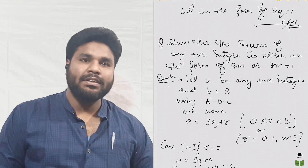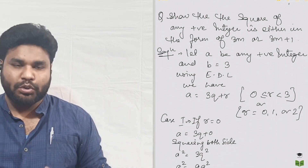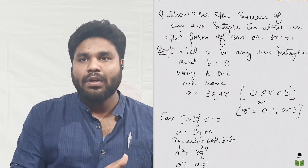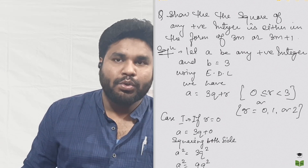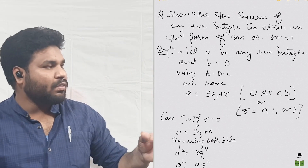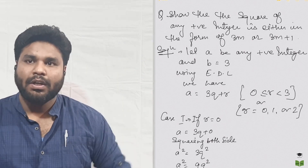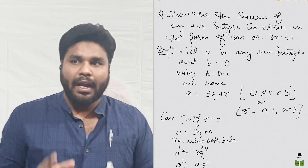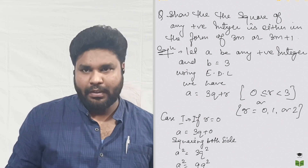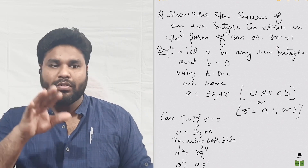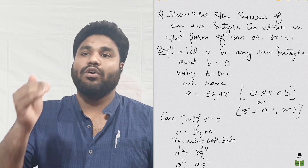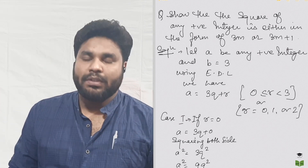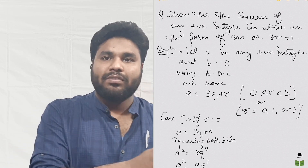The next question is: prove that the square of any positive integer is in the form of either 3M or 3M plus 1. We are going to solve this question with the same process. Let A be any positive integer and B equal to 3. Why 3? Because in the question we need to prove in the form of 3M or 3M plus 1, so we take B as 3.